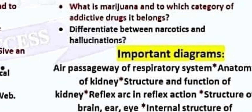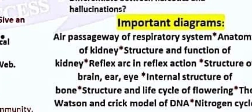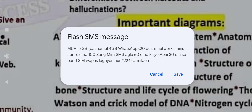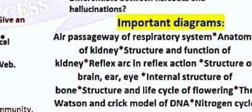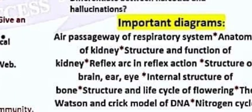Now the important diagrams: all passageways of the respiratory system, anatomy of the kidney, structure and functions of the kidney, the reflex arc in reflex action, structure of the brain, ear and eye, internal structure of bone, structure and life cycle of flowering plants, the Watson and Crick model of DNA, and the nitrogen cycle.